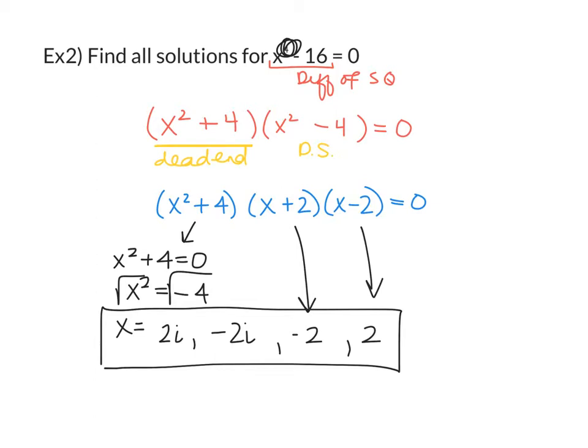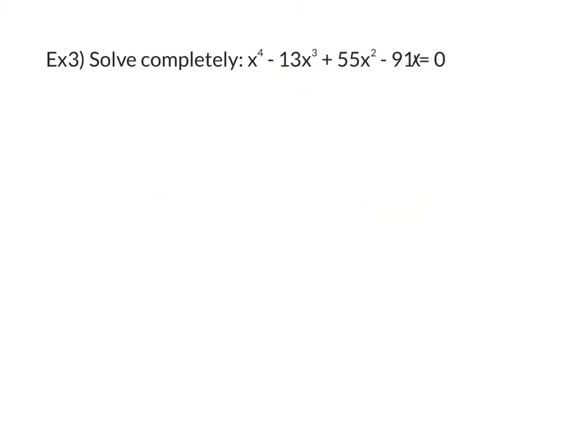One more example. Okay, as with the other ones, I'm going to start with any factoring patterns I know first. So the first thing that I always look for with factoring is going to be a GCF. And I noticed that I can take an x out of all of these. So I'm going to go ahead and do that. GCF is going to be x. So that's going to give me x times x to the 3rd minus 13x squared plus 55x minus 91 equals 0.